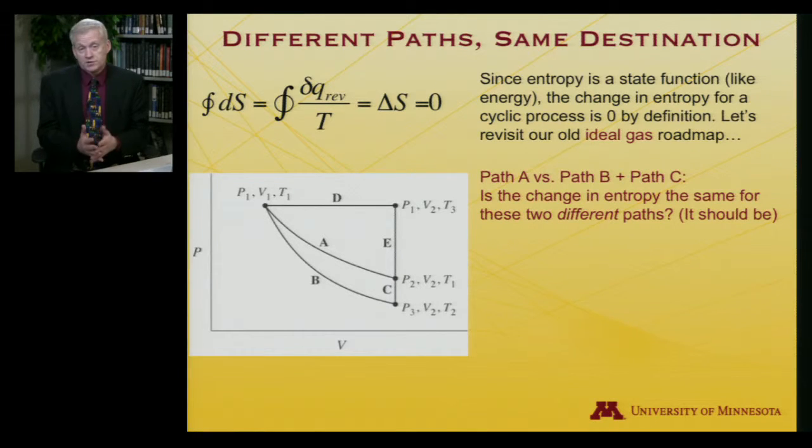So I want to look at, I'll start with path A versus path B plus path C. What's the change in entropy along these two different paths? If it's a state function, it's got to be the same change in entropy. So let's just do the math and check.